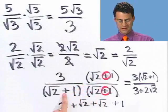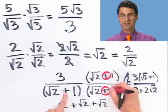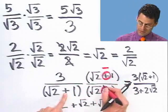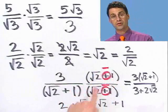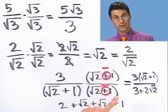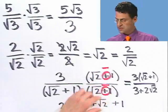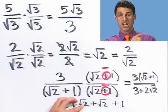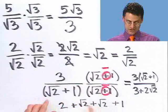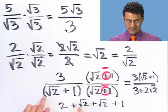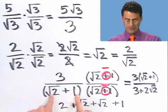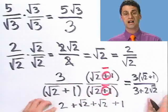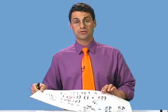Whatever sign this is, make it the opposite. In this case, I'm going to multiply top and bottom by square root of two minus one, over square root of two minus one. This object is called the conjugate. The conjugate is just what I said: if you have a sum of a square root and something, the conjugate is the exact same thing with the sign between them reversed.